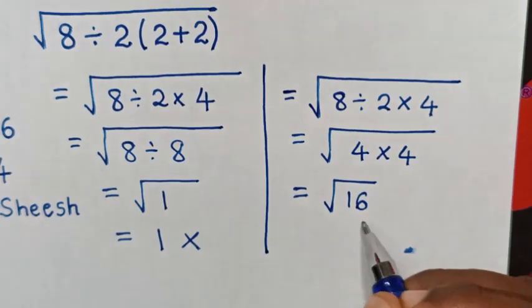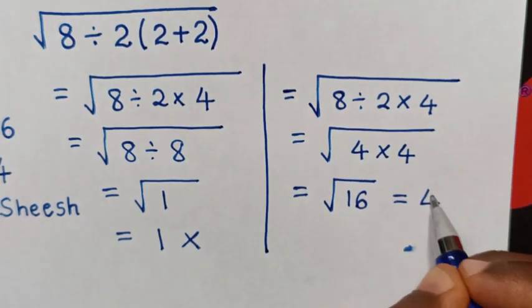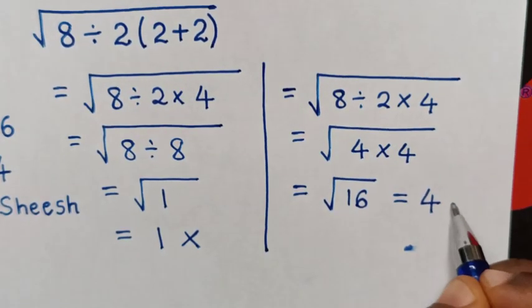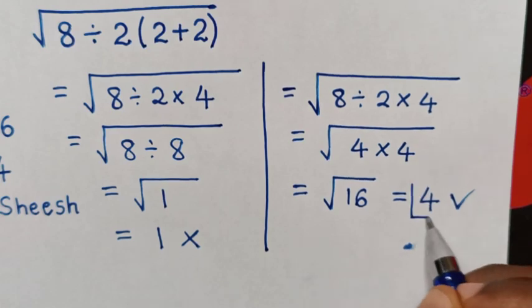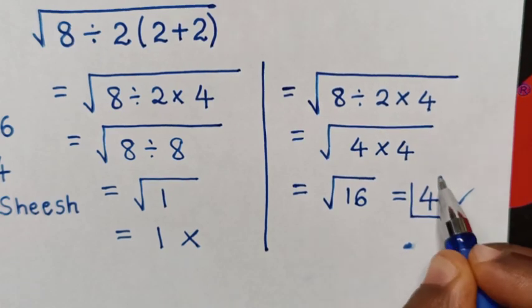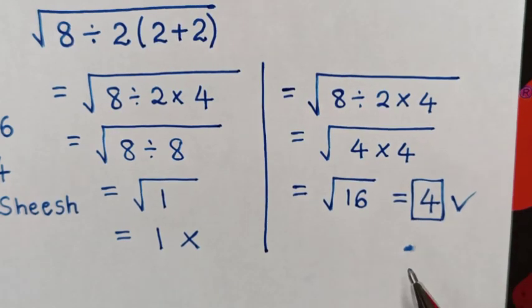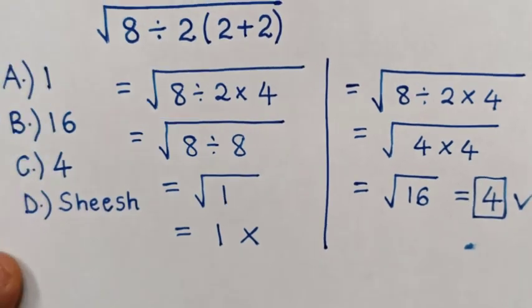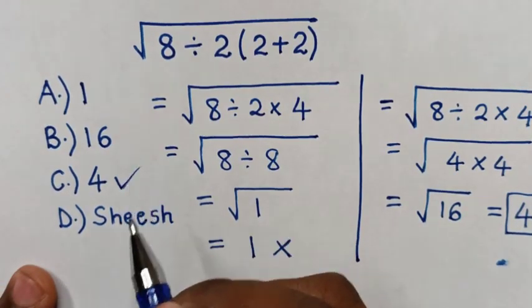Then, square root of 16 is equal to 4. So, this is the correct answer. To select in the multiple choice, it is C.